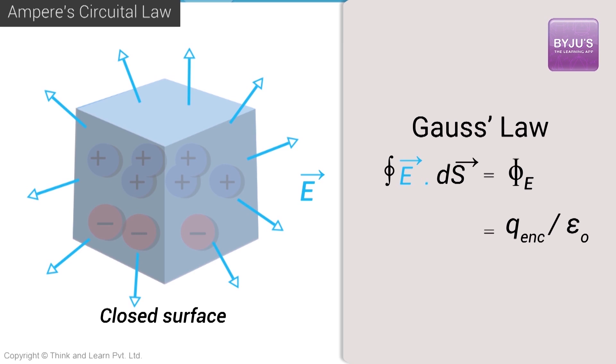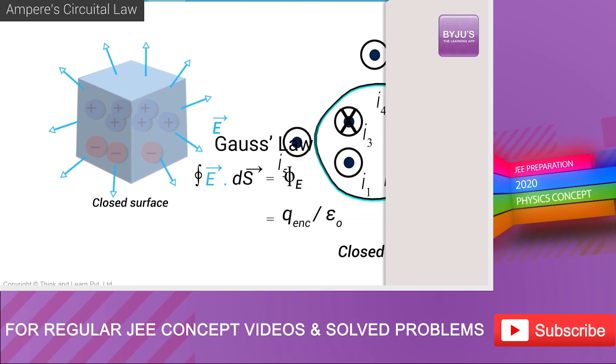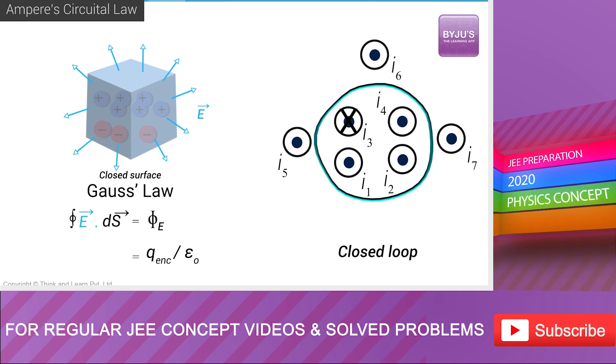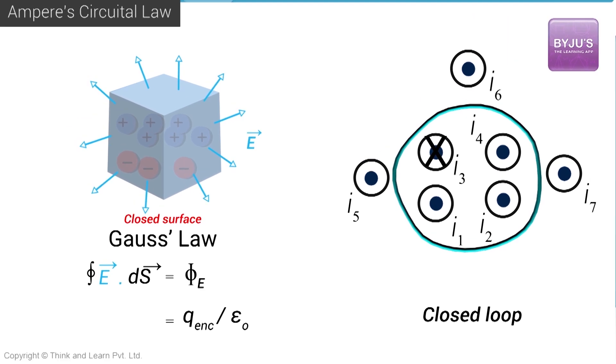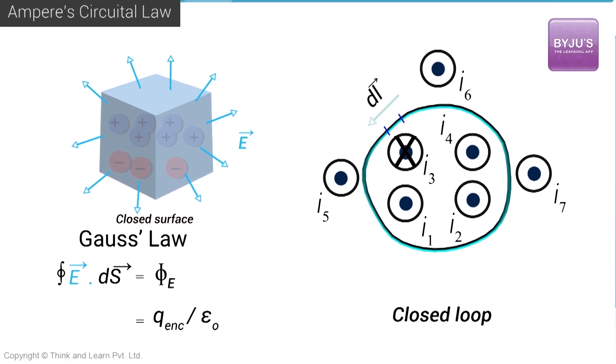This flux led us to understand Gauss's law. Now similarly, the circulation of magnetic field over a closed loop is equal to the permeability of vacuum, which is mu naught, times the current enclosed, that is I enclosed.